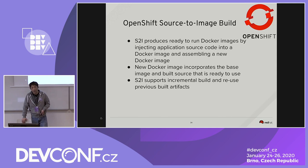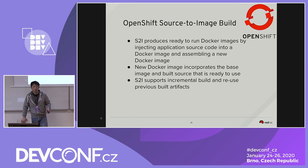How could we use OpenShift for Kitura? OpenShift has an S2I — Source to Image — procedure that can run a Docker image by injecting the application source code into a Docker image and assembling a new Docker image. Using the new Docker image, it incorporates a base image and the built-in source code, ready for deployment. The S2I process also supports incremental builds and allows reuse of previous build artifacts based on versioning.